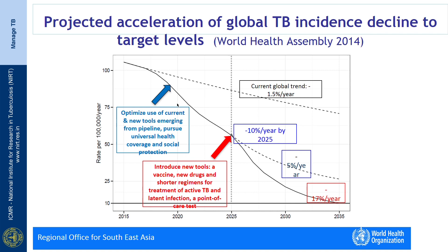Efforts are ongoing, and a new vaccine is expected by around 2025, which could further increase the rate of decline to about 17% per year. The slide also shows the importance of latent TB infection treatment starting from 2025, though we need not wait — LTBI treatment can be initiated even now among all household contacts and other highest-risk groups of people who suffer from TB.